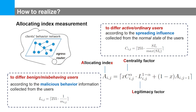We first introduce the allocating index measurement, which is based on the client's behavioral network. The key component is calculating the allocating index, which depends on two factors. The centrality factor differentiates active from ordinary users by considering topological information — namely the spreading influence derived from the normal state of users. The legitimacy factor considers traffic features to differentiate benign users from misbehaving users, calculated based on malicious behavioral information collected from users.